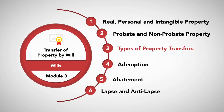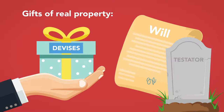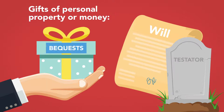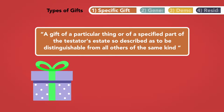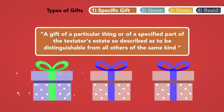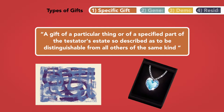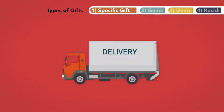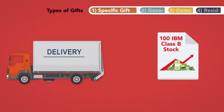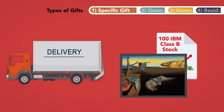Types of property transfers. The primary purpose of a will is to gift property at the testator's death. Note that gifts of real property are sometimes called devises and gifts of personal property or money are sometimes called bequests, but both are included in the term gift. There are four main types of gifts that can be made through a will. 1. Specific gift. A specific gift is a gift of a particular thing or of a specified part of the testator's estate so described as to be distinguishable from all others of the same kind. It may be a unique painting or a piece of jewelry or land that is specifically described in the will. Only delivery of the particular item described satisfies the gift. An example of a specific gift would be 100 shares of IBM Class B stock or the painting The Persistence of Memory by Salvador Dali. In each case, it is clear what item is to be gifted.